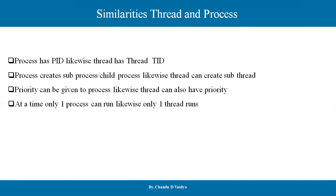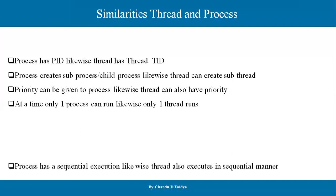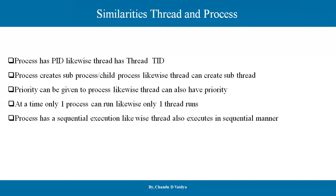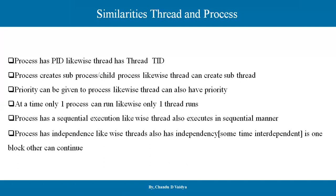At any given time, only one process can run; likewise, only one thread can run at a time — concurrent execution is an illusion due to fast context switching. Process has sequential execution; likewise, thread also has sequential execution. A process has independence; similarly, threads can also operate independently or interdependently. If one thread is blocked, the other can continue.